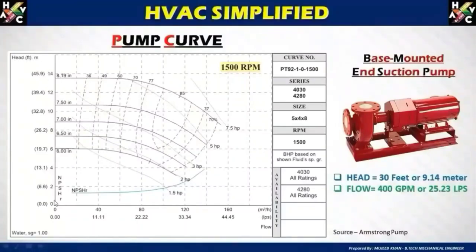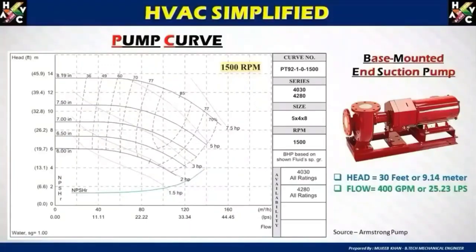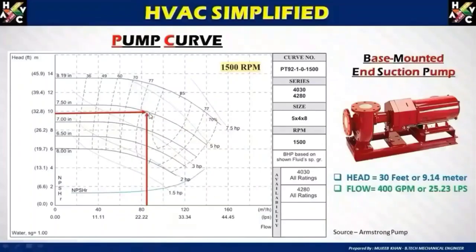On the x-axis there is GPM flow and on the y-axis there is the head in feet. The lines on the curve indicate the impeller size, the horsepower, and dotted lines for motor efficiency. Pump curve graphs are provided by all manufacturers depending on their sizes and capacities. For this Armstrong pump example, you plot a line from the x-axis at 25.23 liters per second and from the y-axis at 30 feet — the intersection point of these two lines is known as the operating point of the pump.